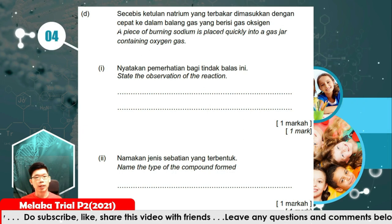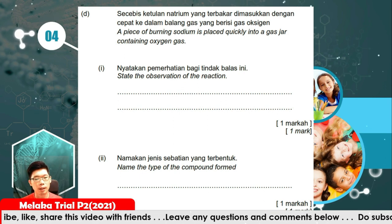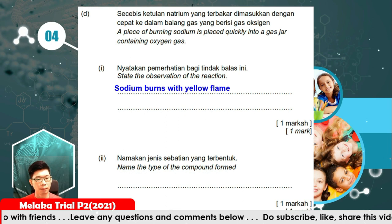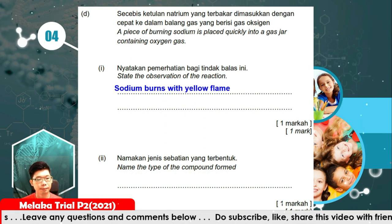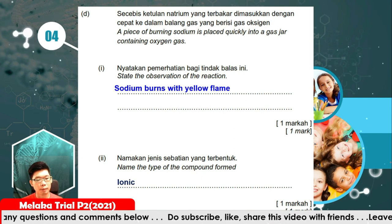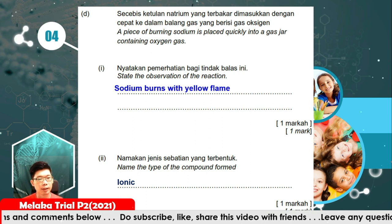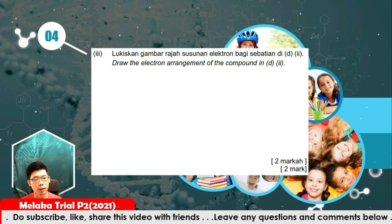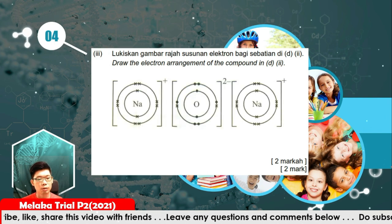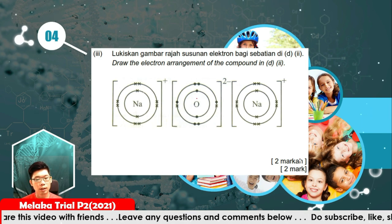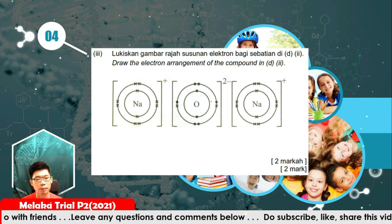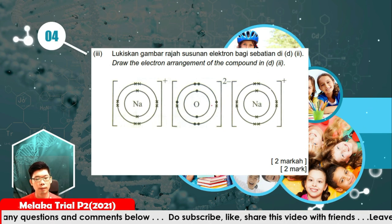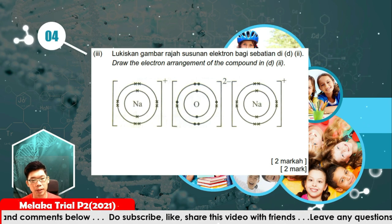A piece of burning sodium is placed into a gas jar containing oxygen gas. The observation: sodium reacts with oxygen and burns with a yellow flame. The compound formed is an ionic compound because sodium is a metal and oxygen is a non-metal. For the electron arrangement of sodium oxide (Na2O): sodium is 2, 8, 1 and loses 1 electron, while oxygen gains 2 electrons from 2 sodium atoms, forming oxide ions attracted by a strong electrostatic force.